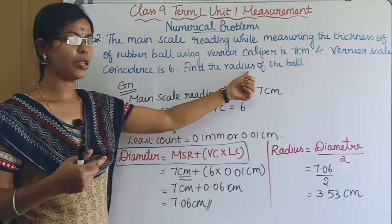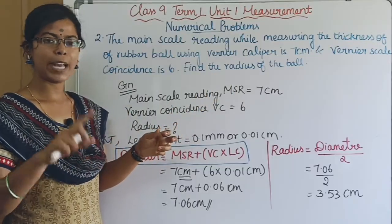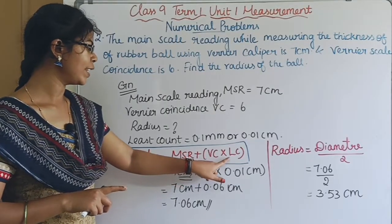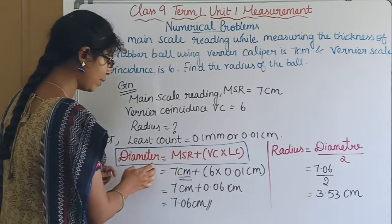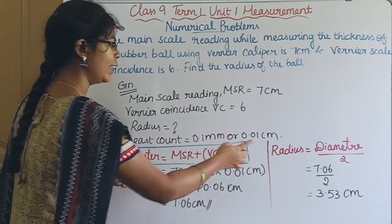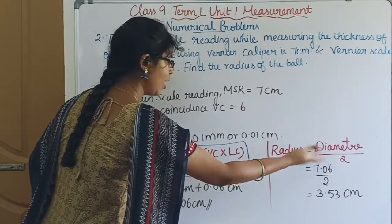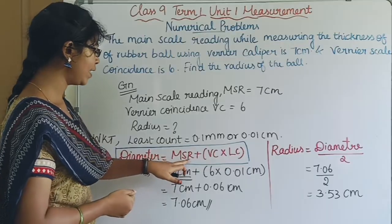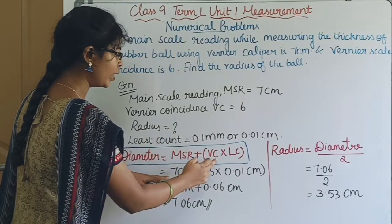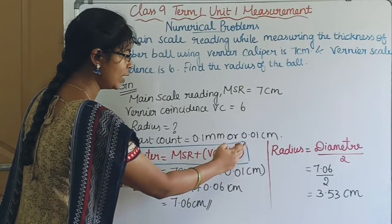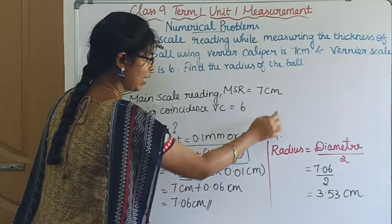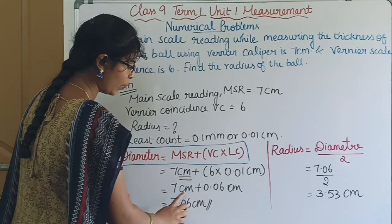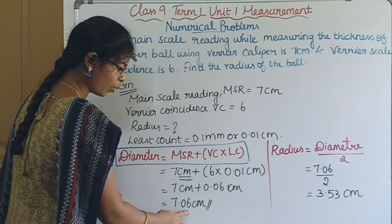Now we find the diameter using the formula: Diameter = Main Scale Reading + (Vernier Coincidence × Least Count). Substituting: Diameter = 7 cm + (6 × 0.01 cm) = 7 cm + 0.06 cm = 7.06 cm.